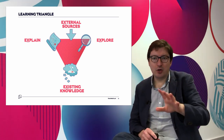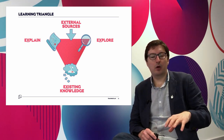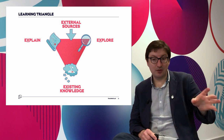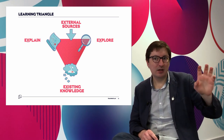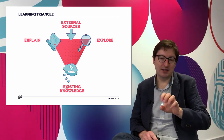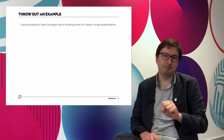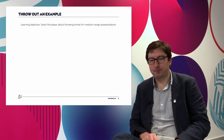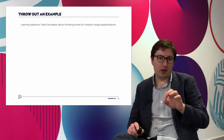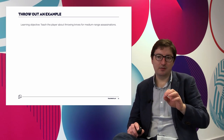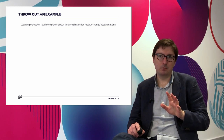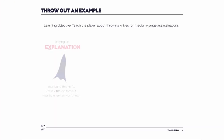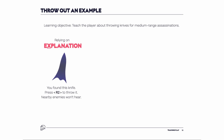We're going to come back to external sources a bit later, and for now we're just going to focus on the things over which we have control. With this idea of a triangle and these three distinct types of teaching, I want you to be able to ask yourself: which of these three — explain, explore, or existing knowledge — and their differing trade-offs and risks, could we use to teach our players the rules? Let's talk about an example. If we lean into each teaching type, our learning objective is to teach the player about throwing knives for medium-range assassinations.